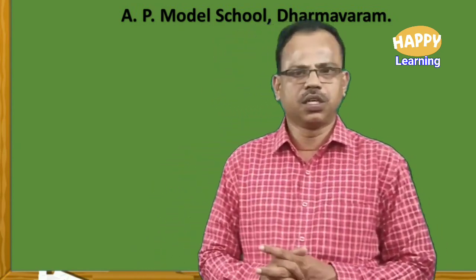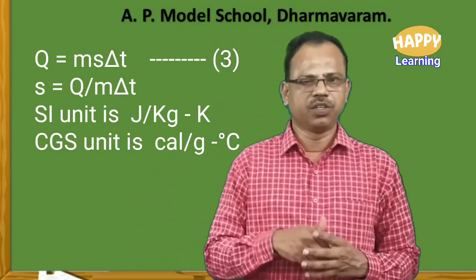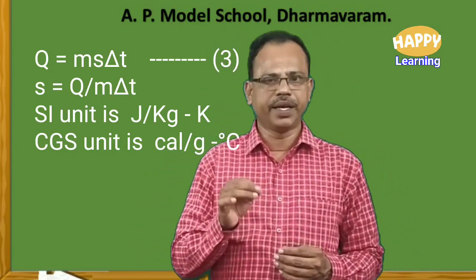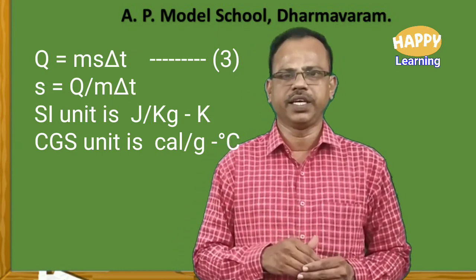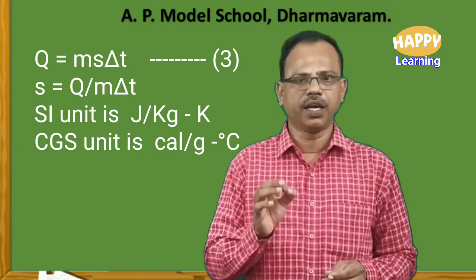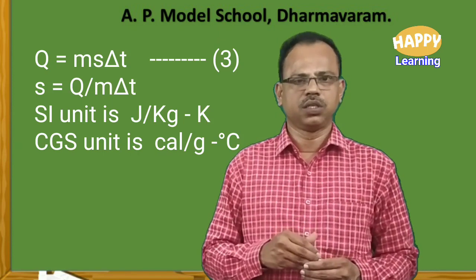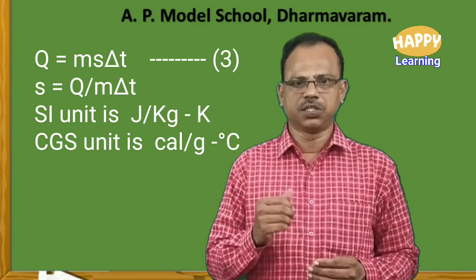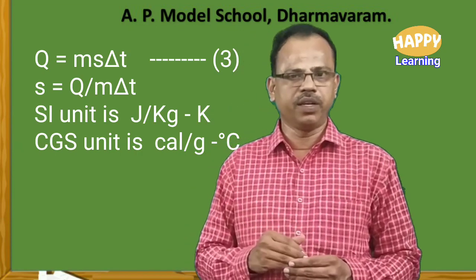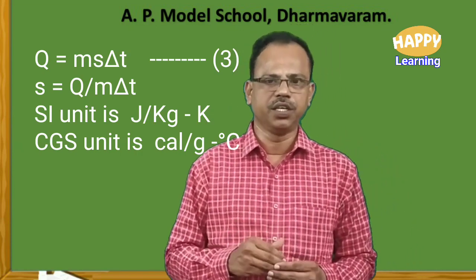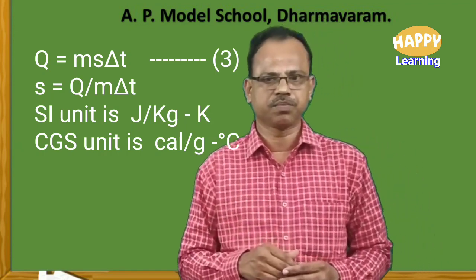Yesterday we discussed about specific heat. We derived the formula q equal to ms delta t, and from that we gave the expression for specific heat s as q by m delta t. We also gave the units for specific heat. Its SI unit is joule per kg Kelvin and CGS unit is calorie per gram per degree Celsius.